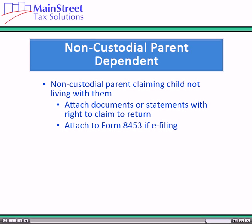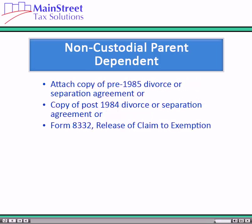A non-custodial parent who is claiming a child that does not live with them must attach to the tax return — or to Form 8453 if e-filing — a written document that substantiates their right to claim this dependent. If this is the case, the number 2 would be selected as the dependent code, and the software would make the checkboxes in the non-custodial parent's section required. One of the checkboxes would need to be selected based on the item being attached, such as a copy of a pre-1985 divorce or separation agreement, a post-1984 divorce or separation agreement without conditions, or Form 8332 release of claim of exemption.